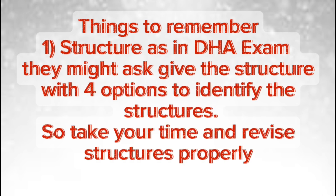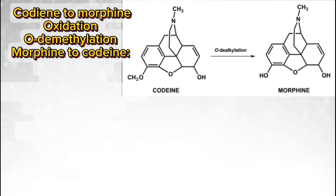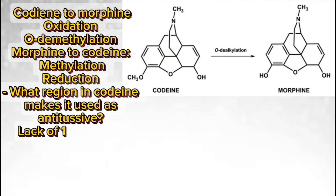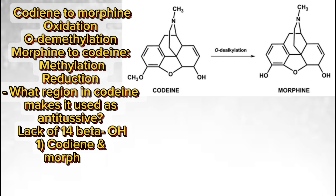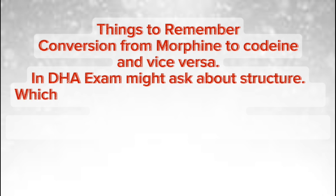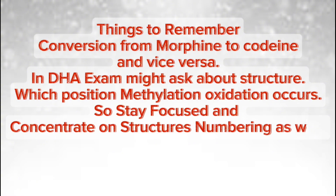Codeine to morphine: oxidation (de-methylation). Morphine to codeine: methylation. What region in codeine makes it used as an antitussive? The lack of the 14-beta OH group. Things to remember: conversion from morphine to codeine and vice versa. In the DHA exam they might ask about which position methylation or oxidation occurs, so stay focused and concentrate on structures and numbering as well.